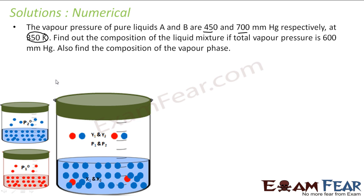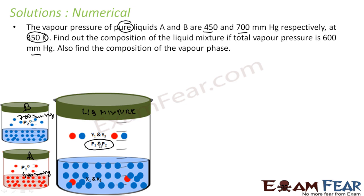Let's take the red as component A and the blue as component B. The vapor pressure of pure A is P1° = 450 mmHg and P2° = 700 mmHg. We need to find the composition of the liquid mixture where the total vapor pressure P1 + P2 = 600 mmHg.